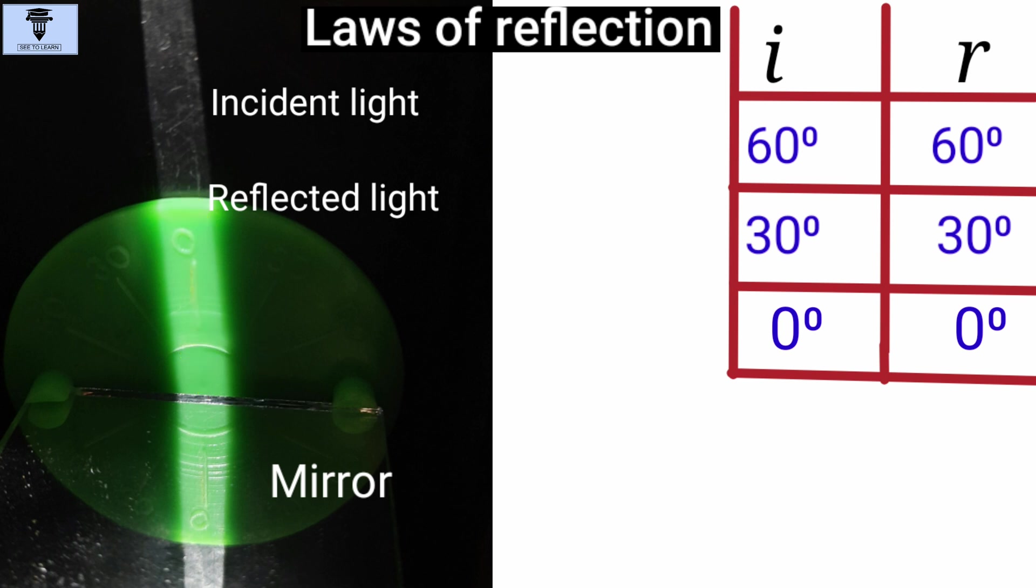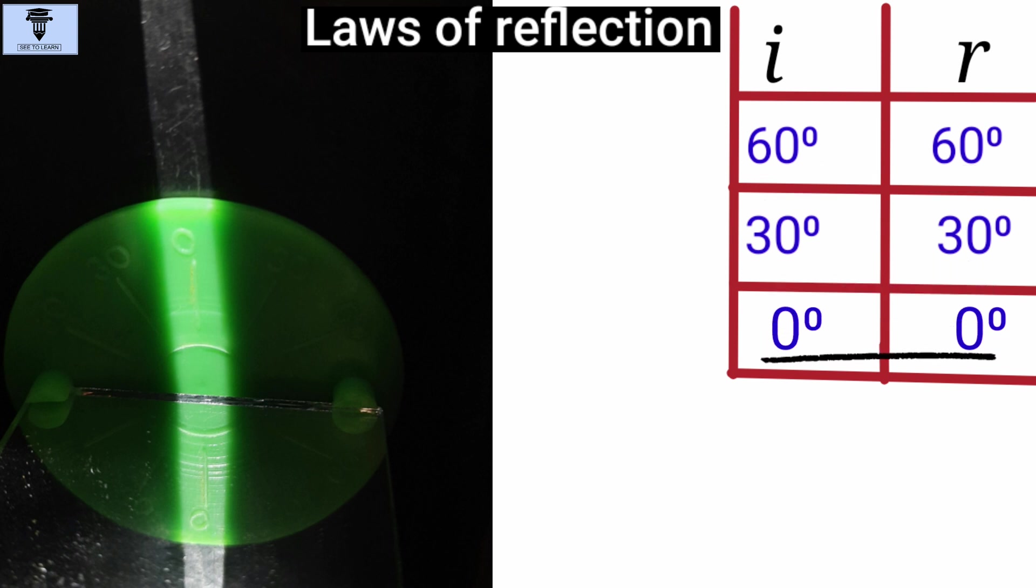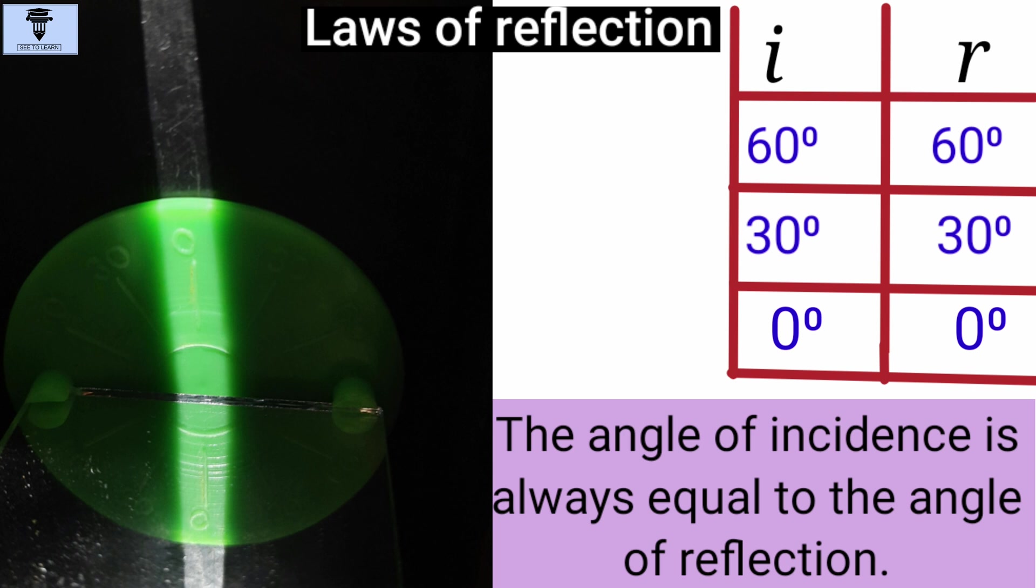So, what do we deduce from these observations? Correct! The angle of incidence is always equal to the angle of reflection. And this is what first law of reflection of light states.